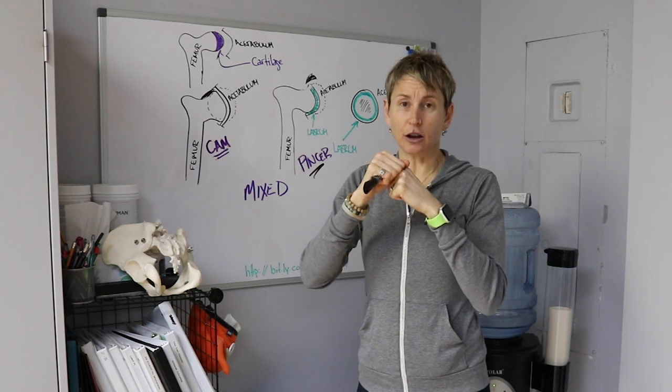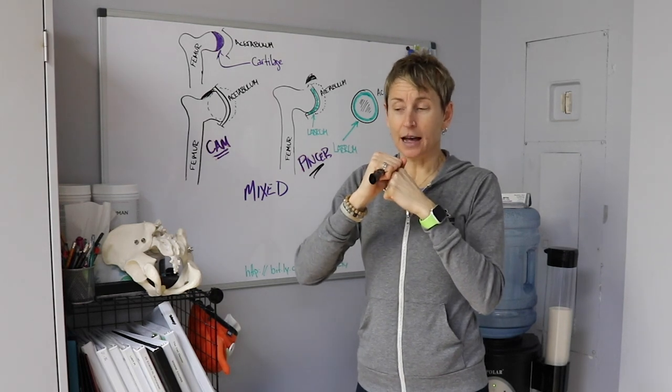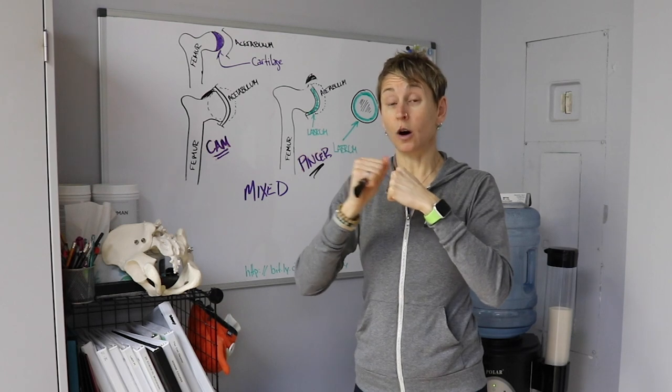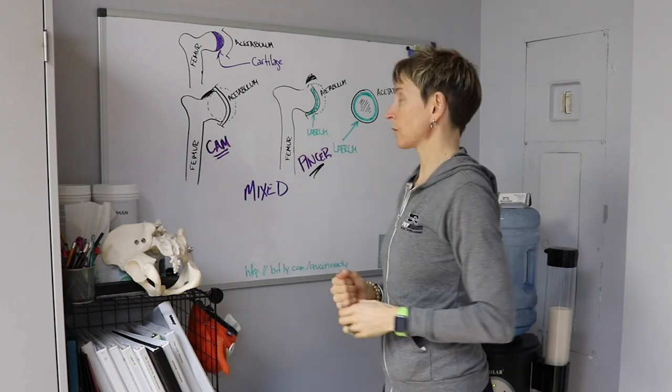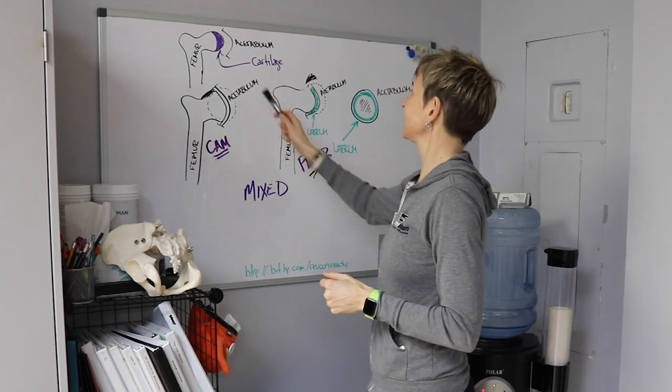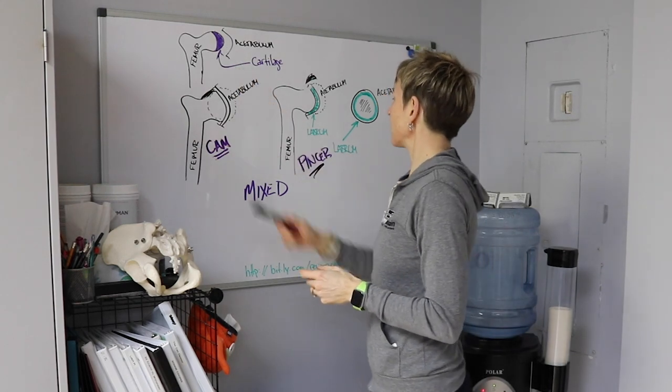And in a really bad osteoarthritic hip, that cartilage will be so worn down that they'll say you have bone on bone. And yeah, it just means your bones are rubbing on each other, which is not ideal.